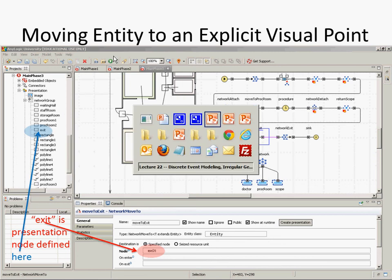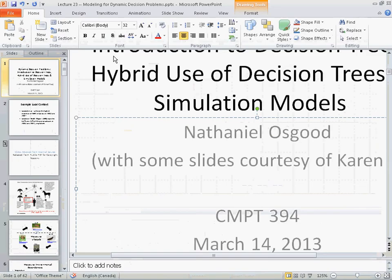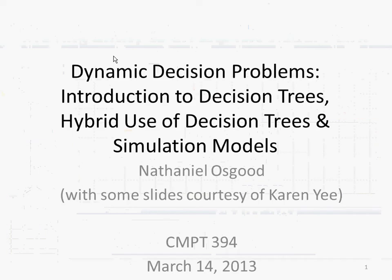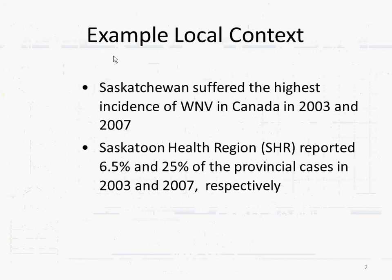Dynamic decision problems are an underappreciated area of modeling. The techniques we've learned are of great value here, but to address it well you'll benefit from bringing in additional techniques. We're going to bring in decision trees. I'm going to motivate this with an example context because I think reasoning through an example helps you understand the need for this approach.